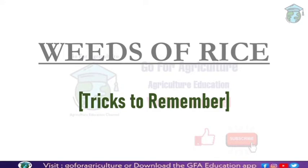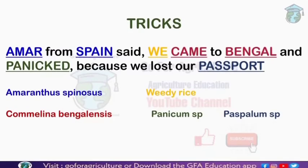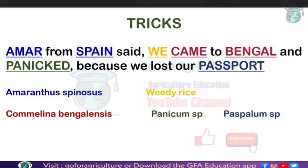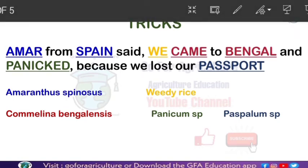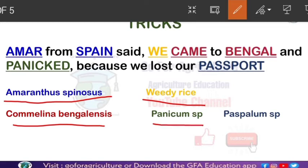So let's start. The five main weeds we are going to learn today are: Amaranthus spinosus, weedy rice, Commelina bengalensis, Panicum species, and Paspalum species.